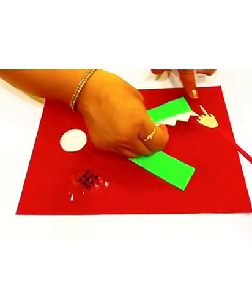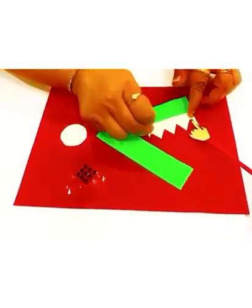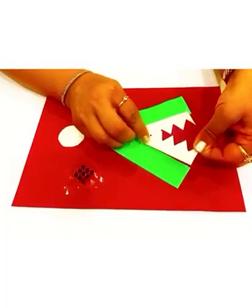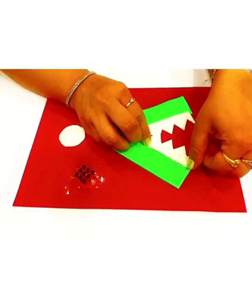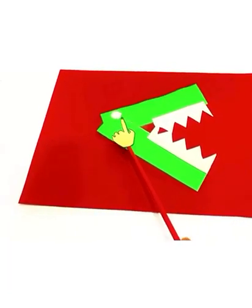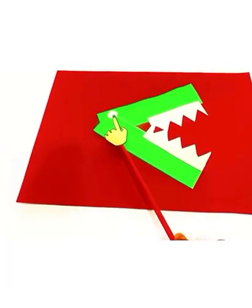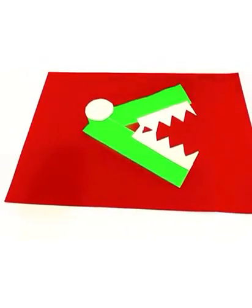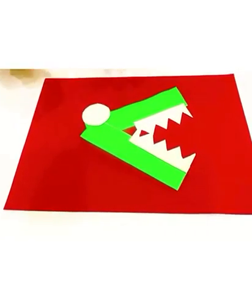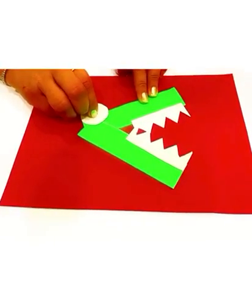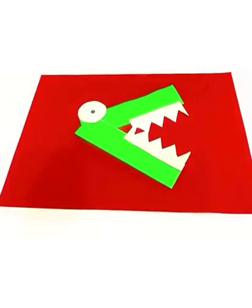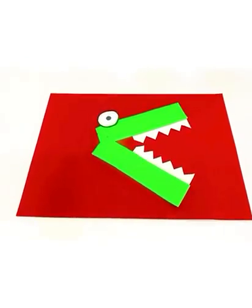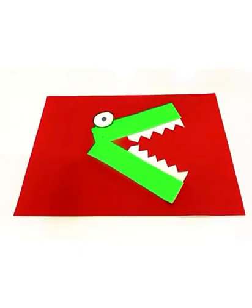Now paste the white strip here. Likewise, the other strip here. Now put some fevicol here on the top like this. And paste the circle here for the alligator's eye. And paste the bindis here like this. Ah, that is so much fun. Look at that. Our alligator is ready.